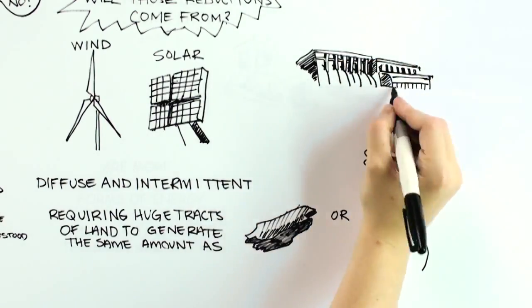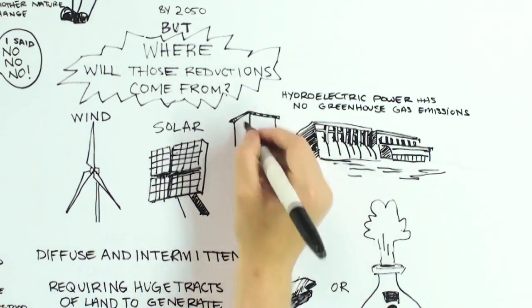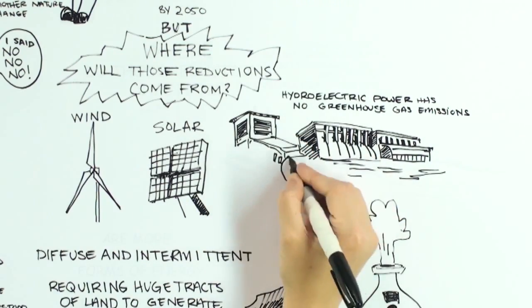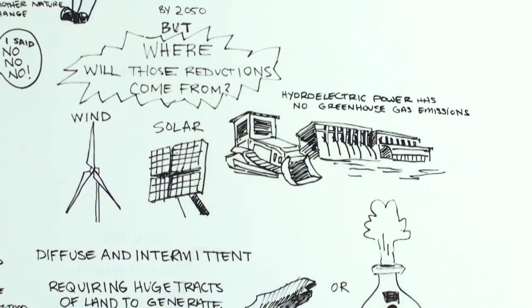Hydroelectric power is attractive since it has essentially no greenhouse gas emissions. Environmental concerns, though, are not only blocking the construction of new hydro dams, they are leading to the removal of some of the existing ones.